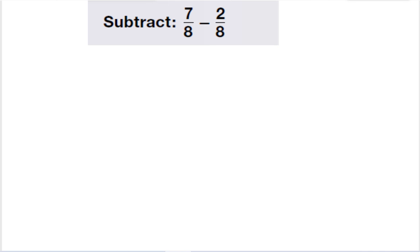It's the same when subtracting fractions. The denominators have to be the same. And then I just subtract the numerators. So, the denominator stays the same. And then we have 7 minus 2, which is 5. My answer is 5 eighths.